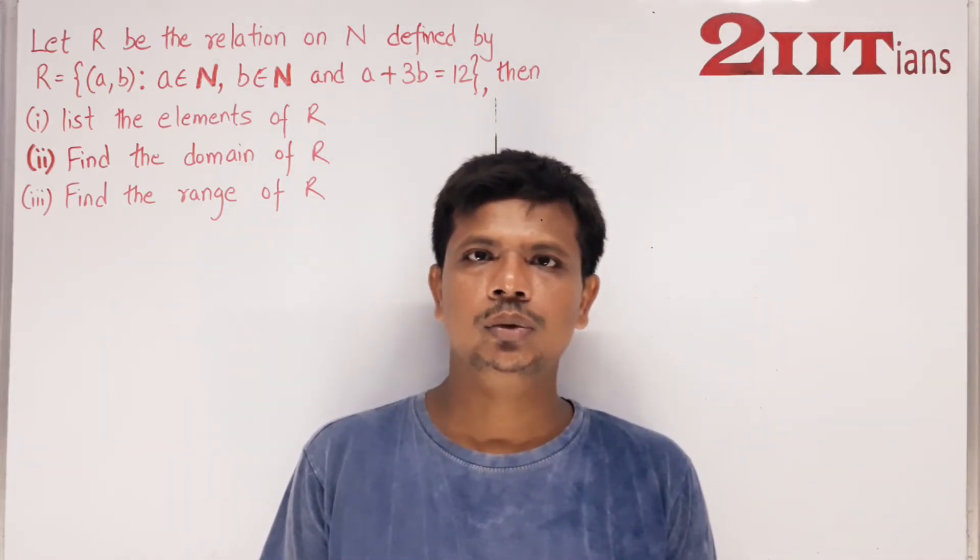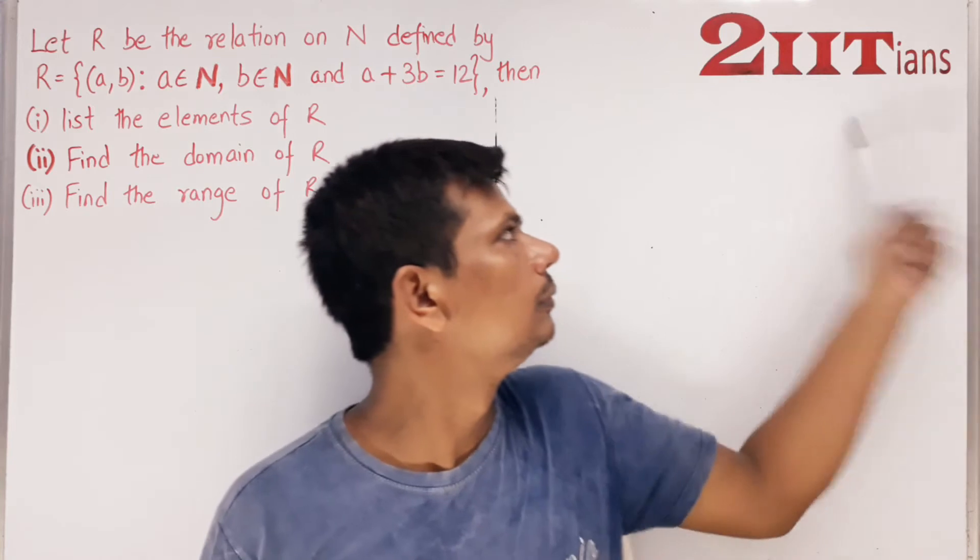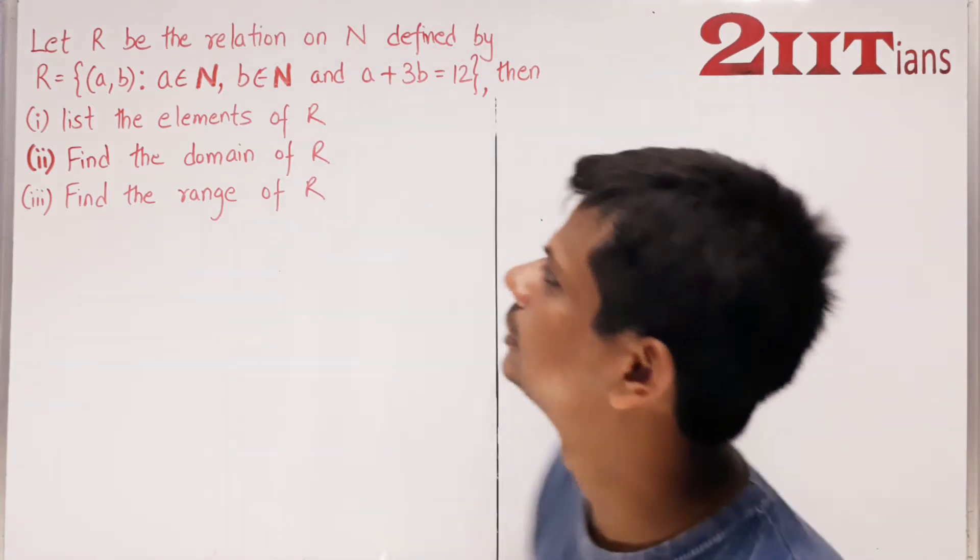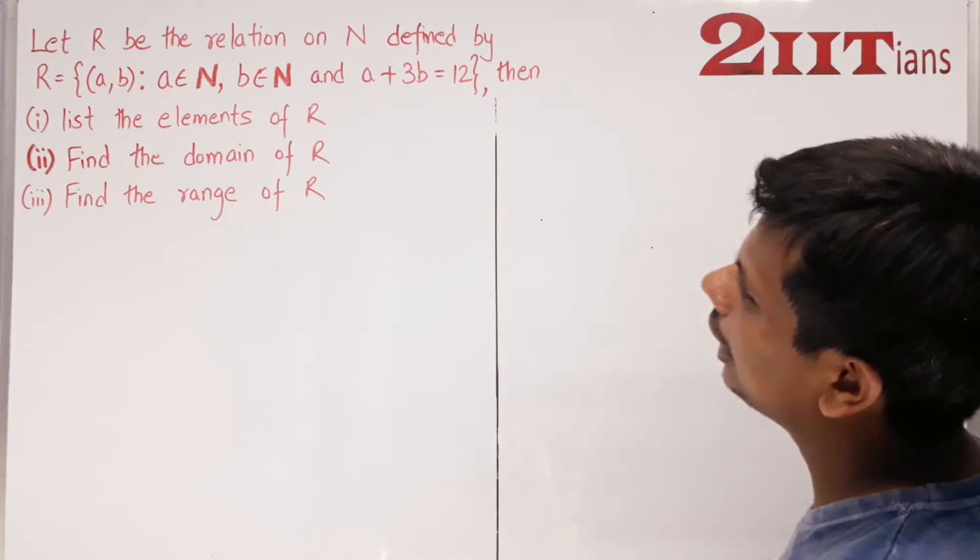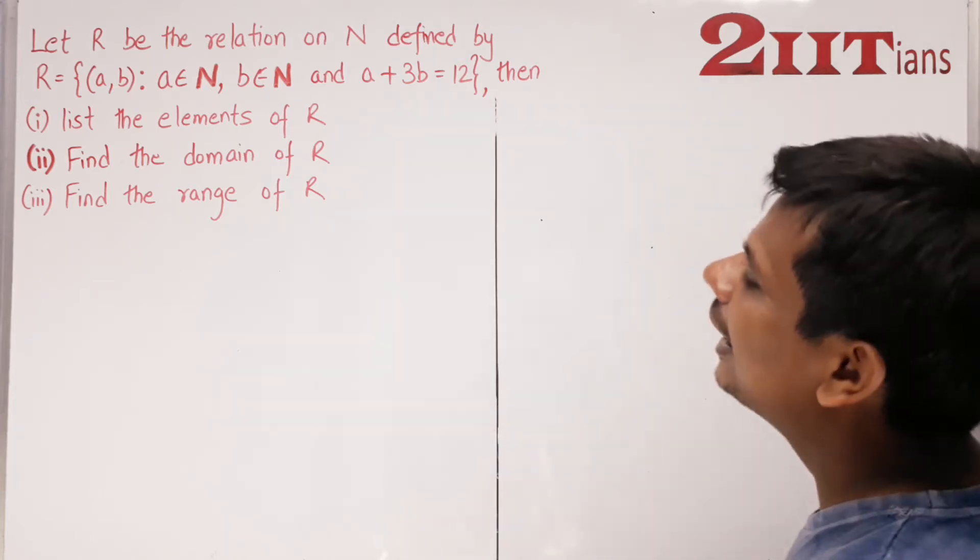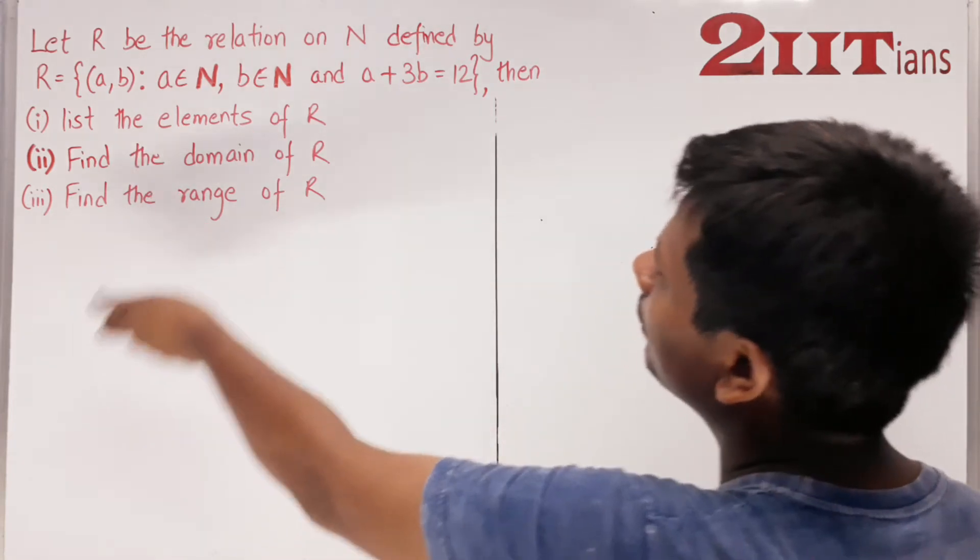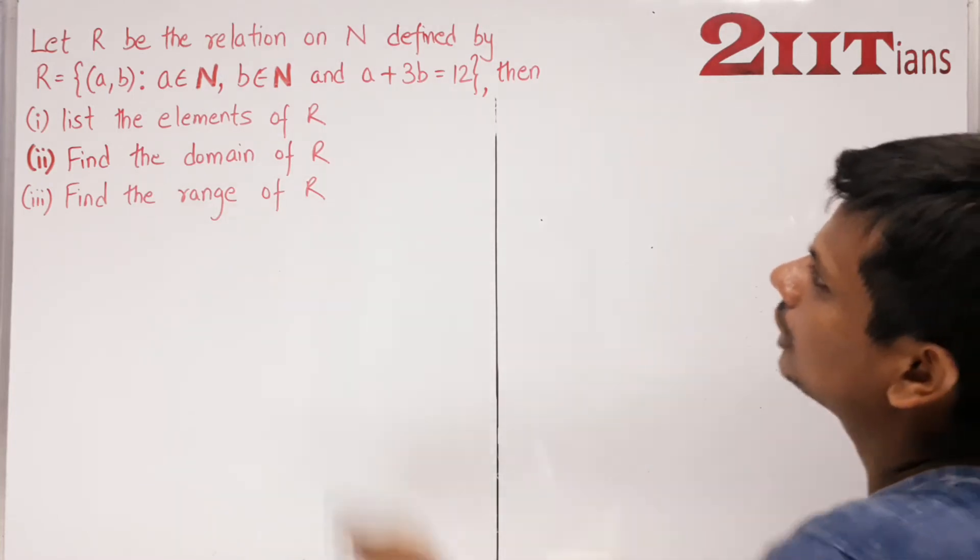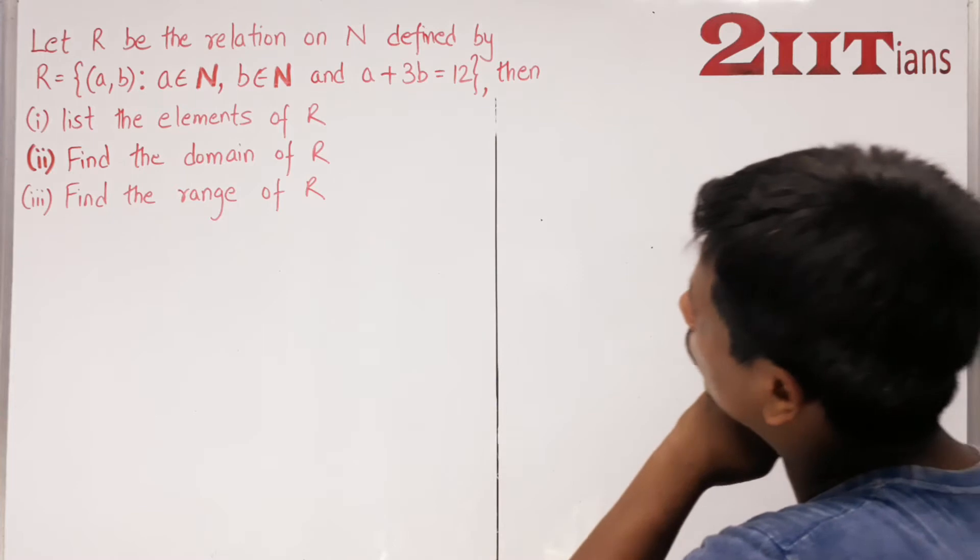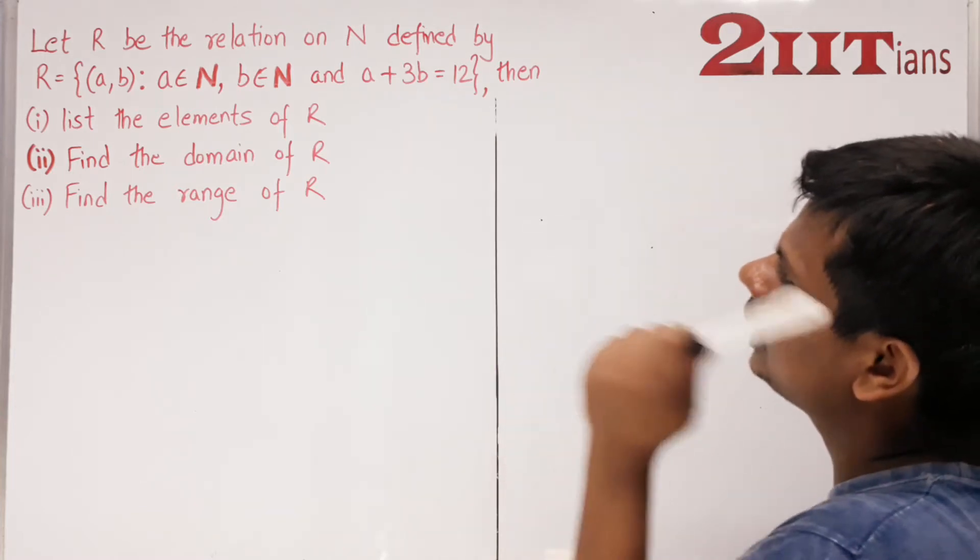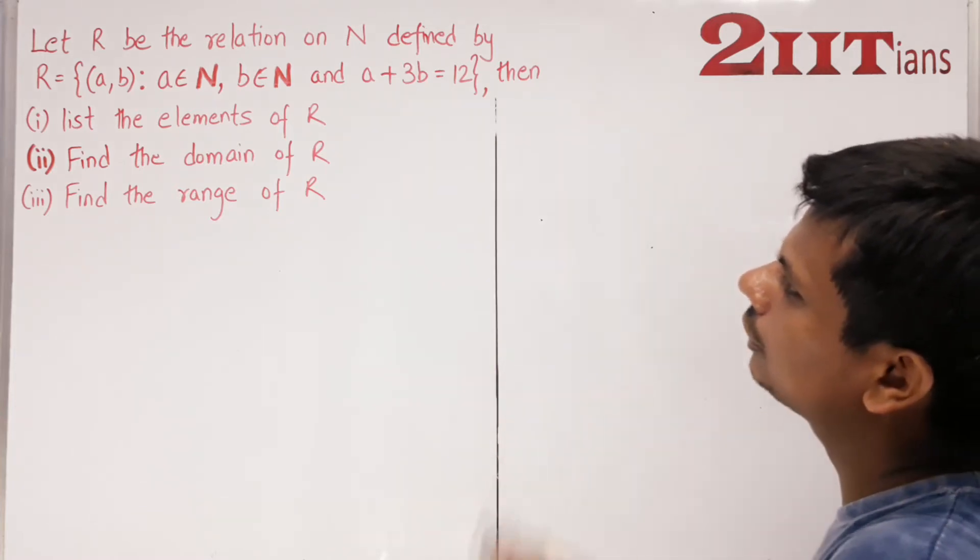Let R be the relation on N defined by R={(a,b): a∈N, b∈N and a+3b=12}. Then: (i) list the elements of R, (ii) find the domain of R, (iii) find the range of R.